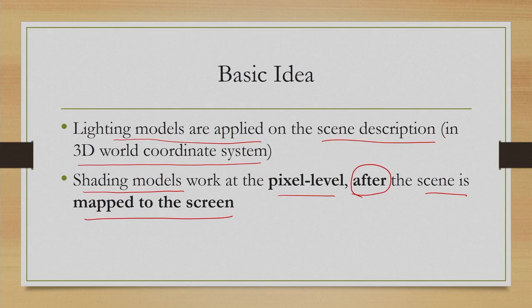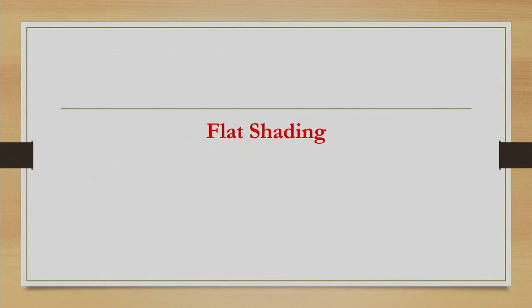There are broadly two differences between lighting and shading models. Lighting models are very expensive because they involve large numbers of floating-point operations. In contrast, shading models are interpolation-based, meaning we can use efficient incremental procedures to perform computations. The other major difference is that lighting models are applied on the scene description in the 3D world coordinate system, whereas shading models typically work at the pixel level after rendering. What is important is to understand the basic concepts rather than sticking to the exact sequence of pipeline stages.